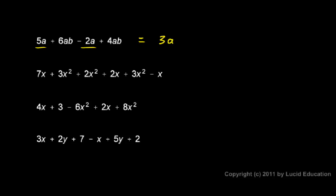And then I have a 6ab and a 4ab. I can see that the two terms that are left are both ab terms. Those can be combined. 6ab and 4ab combine to give me a 10ab. So 3a plus 10ab is the answer.